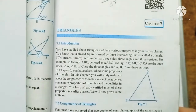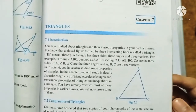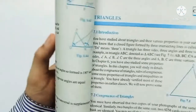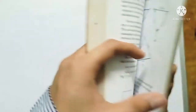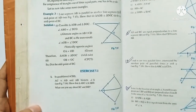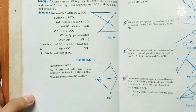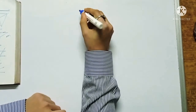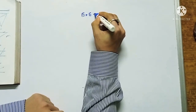Hello students of Class 9. This is General Maths Chapter 7, Triangles. We will cover congruence of triangles. Since you have already learned about congruence of triangles in lower classes, I will start directly from Exercise 7.1, where we will discuss examples and theorems.